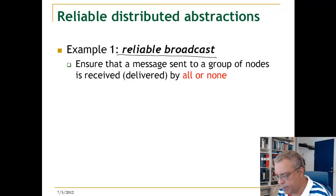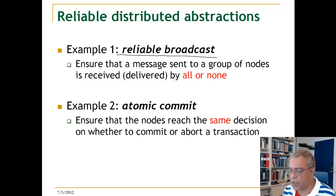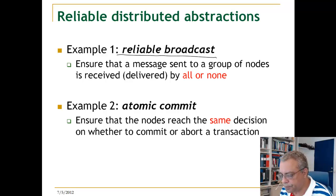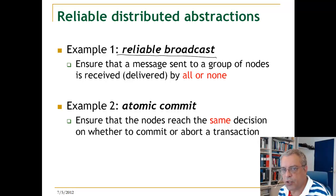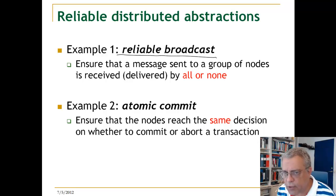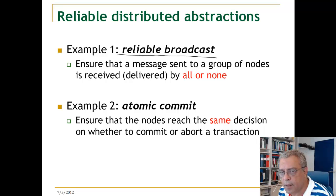Another possible abstraction, which is a higher-level abstraction, is atomic commit, which is used in transactions. Atomic commit ensures that you have a set of nodes that you want to come to an agreement, ensuring that all nodes reach the same decision — either all agree to do some action, which we call commit, or if one of the nodes says it doesn't want to do the action, all will abort.